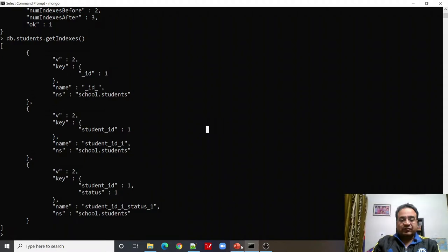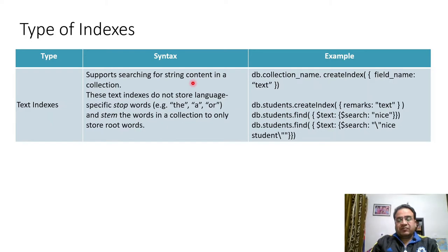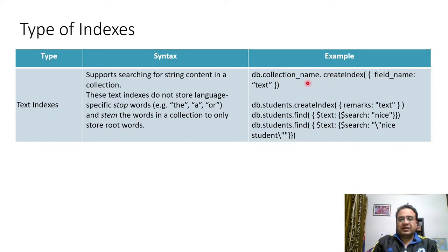We also have text indexes. The purpose of text indexes is to support searching for string content in a collection. We may have a remarks column or other string fields present in our collection, and we can create text indexes to perform full-text search on those fields. This is how we create a text index: specify the field name and use 'text' as the index type.